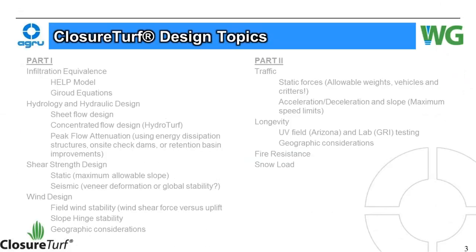Part one topics, as a quick review: we talked about infiltration equivalence using either the HELP model or Giroux equations instead of the HELP model nowadays. Hydrology and hydraulic design, sheet flow, concentrated flow, peak flow attenuation, shear strength design, static maximum allowable slopes, seismic veneer deformation or global stability, wind design, field wind stability, wind shear force versus uplift, slope hinge stability, and geographic considerations.